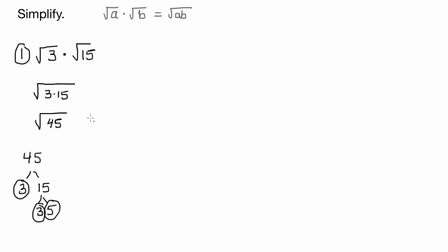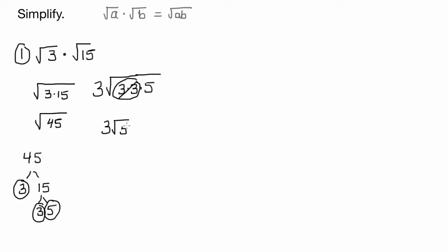So instead of writing the square root of 45, we can write the square root of 3 times 3 times 5. And then remember, because it's square root, for every pair you have, you circle it, cross it out, and bring one outside. So you end up with your answer being 3 root 5.